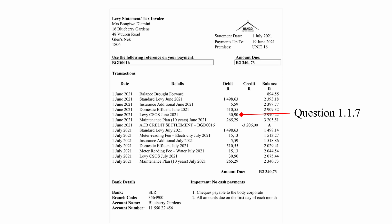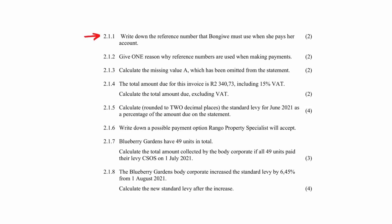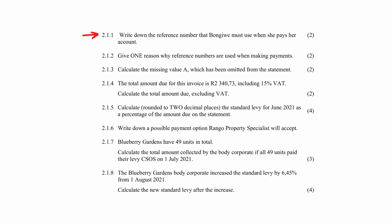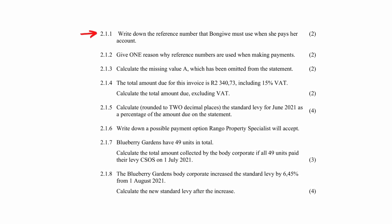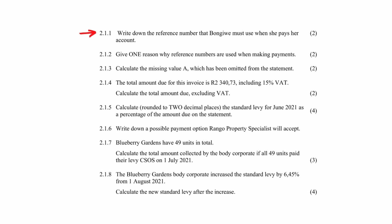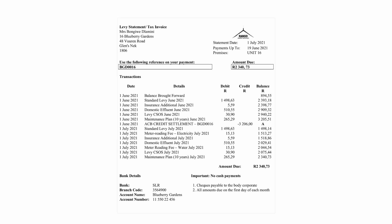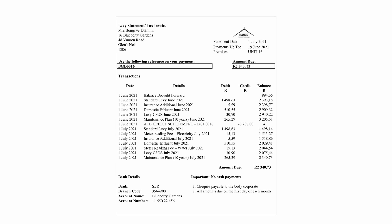Note that no cash payments are allowed. The levy CSOS is given as R30.90 for June and July. In Question 2.1.1, you have to write down the reference that must be used when making payments. From the statement, the reference number for this person is BGD0016.